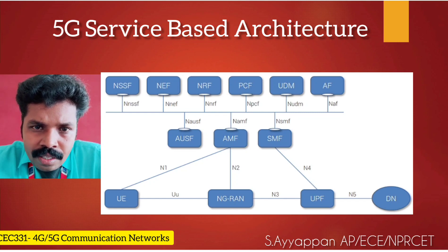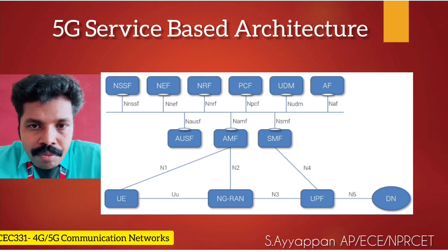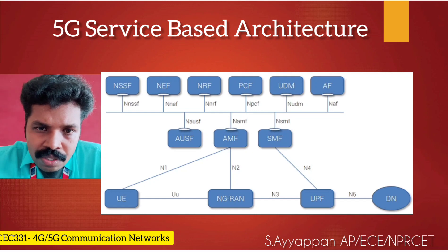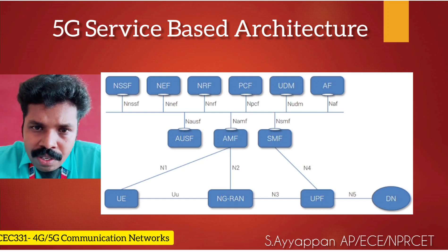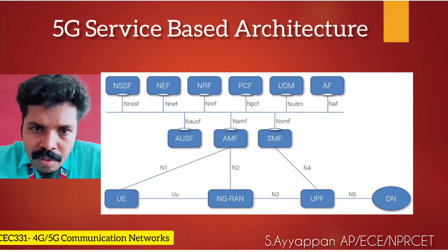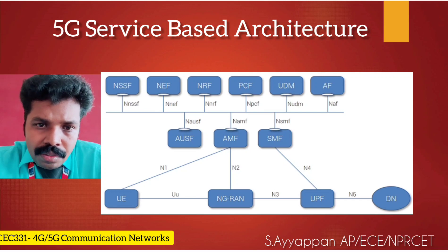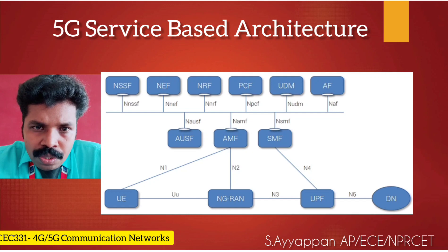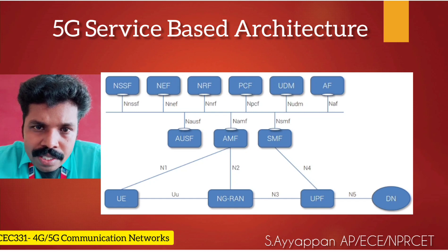For example, if AMF wants to communicate with SMF, SMF first has to publish its information to NRF. Whenever AMF is looking for SMF, it will send a query to NRF. NRF provides the information about which SMF instances are available and gives that information to AMF. AMF will then choose one of the SMFs for that particular communication. In short, NRF works like yellow pages for service producers and service consumers.